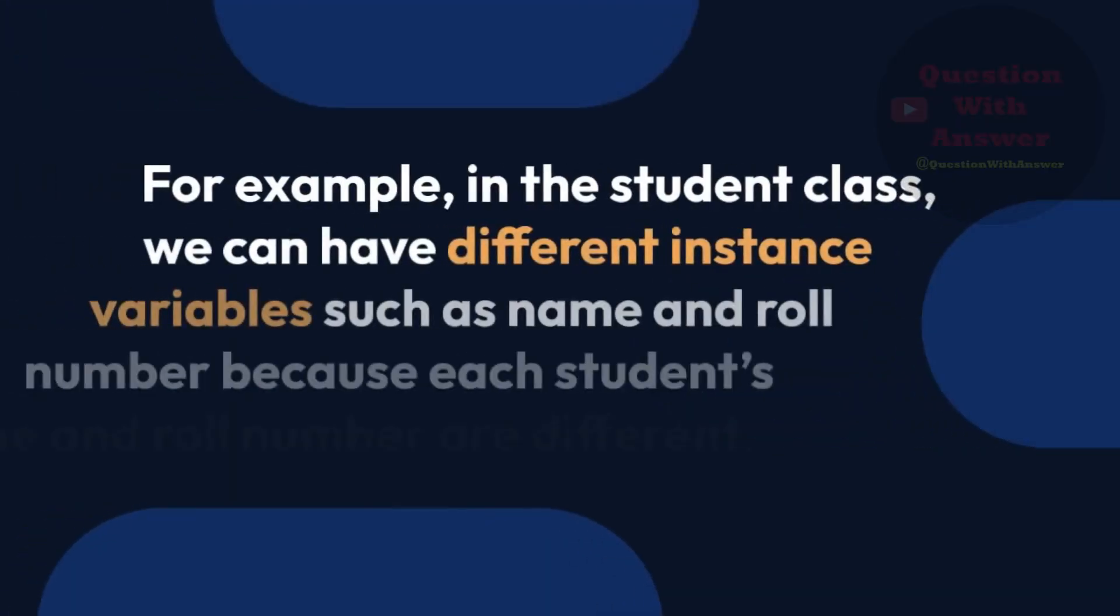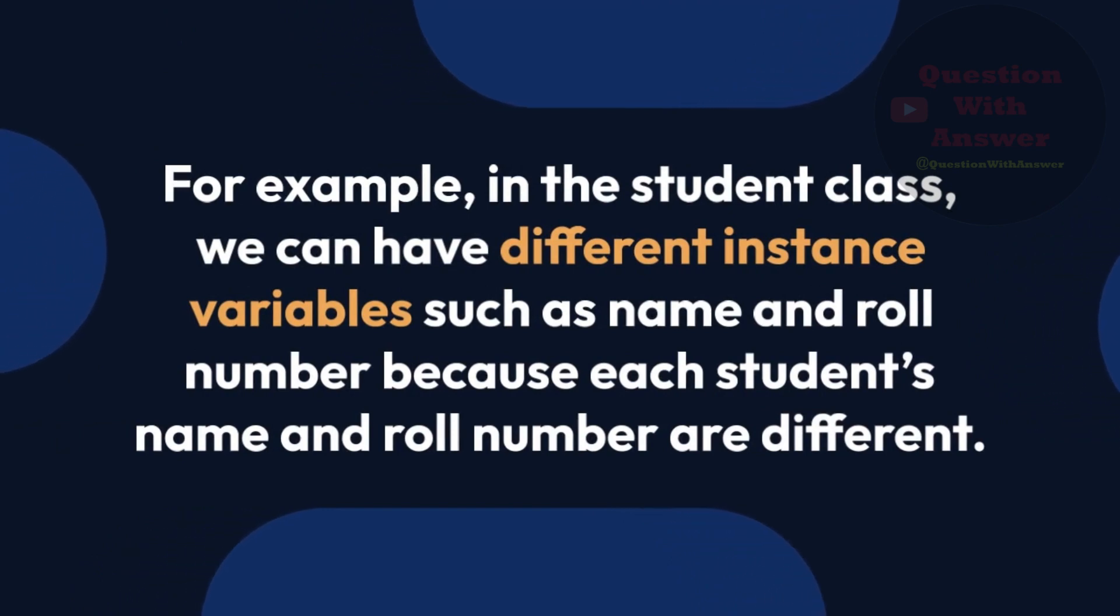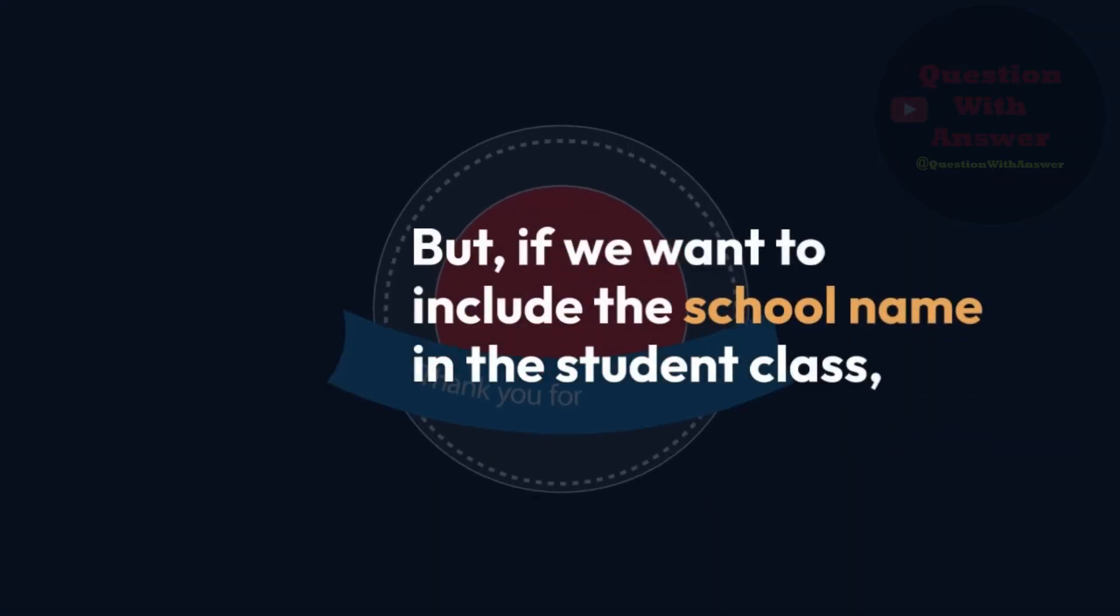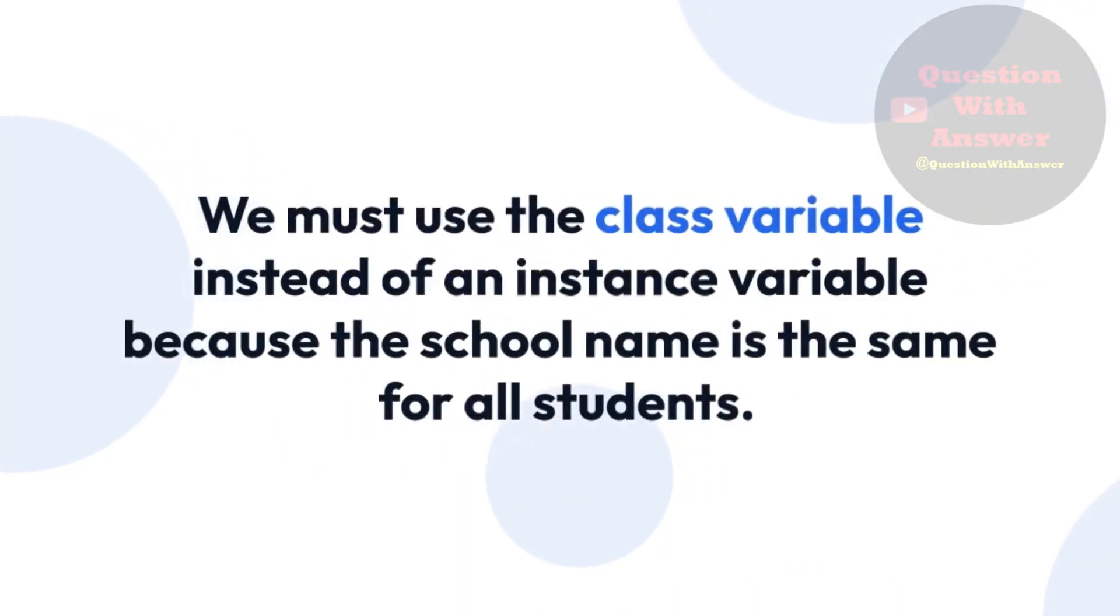For example, in the student class, we can have different instance variables such as name and roll number because each student's name and roll number are different. But, if we want to include the school name in the student class, we must use the class variable instead of an instance variable because the school name is the same for all students.